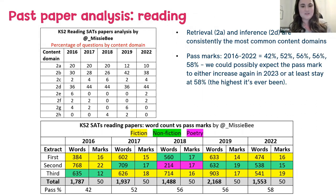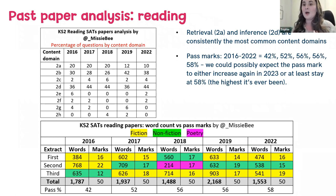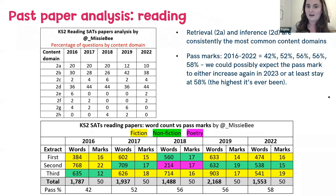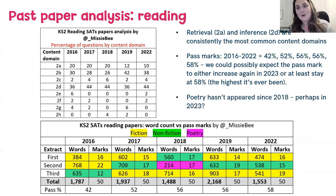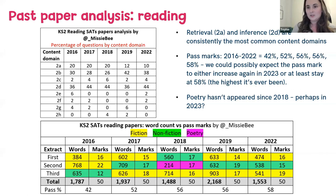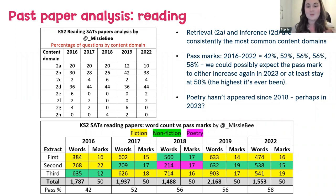The very colorful grid is an analysis of extract types that have appeared in the papers. There are three extracts in each reading paper: fiction, nonfiction, and poetry. Looking back at the past five sets of papers, poetry has only appeared once so far. If I had a crystal ball, I would assume poetry could come up next year. Ofsted also has a focus on poetry at the minute, and how poems are being covered across the English curriculum, so it seems sensible to assume poetry might appear.